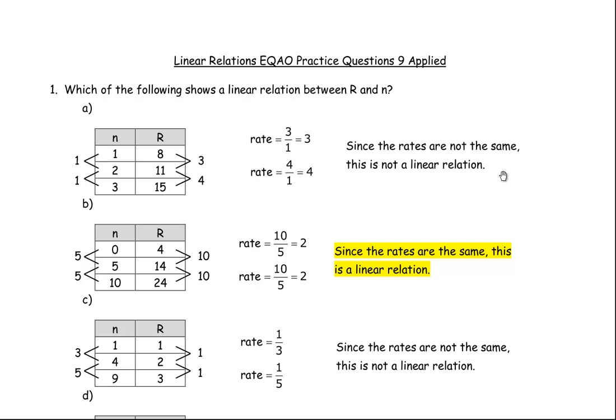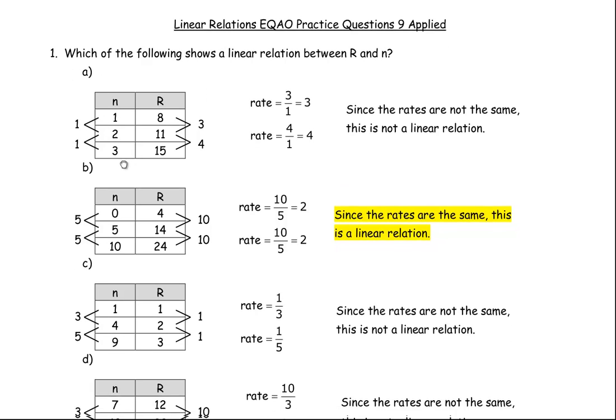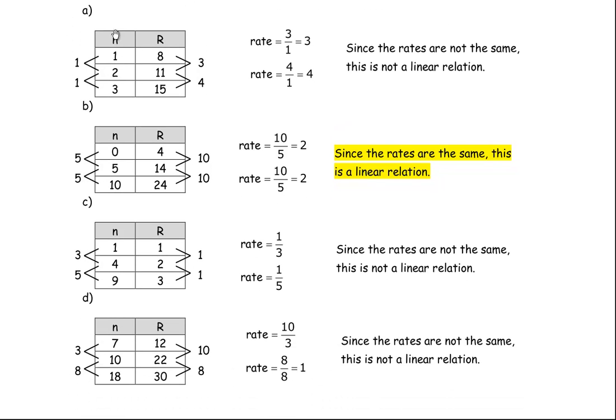This is the solutions to linear relations EQAO practice questions grade 9 applied. Question number 1. In this question you're asked which of the following shows a linear relation between R and N. Notice in the tables here, N is the independent variable and R is the dependent variable in all the tables.